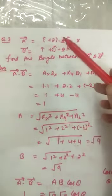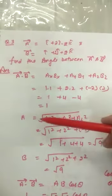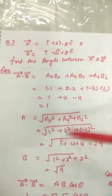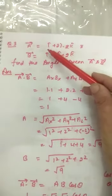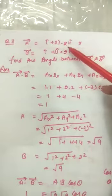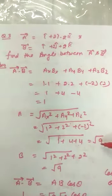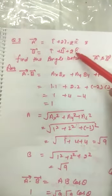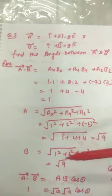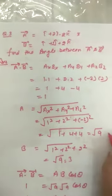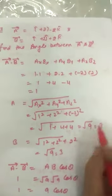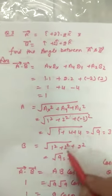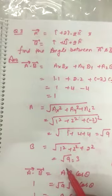Then we find the magnitude of vector a. The formula for magnitude is: square root of (ax² + ay² + az²). With ax=1, ay=2, az=minus 2, the magnitude is under root 9, which equals 3. Similarly, the magnitude of vector b is also under root 9. We write it in terms of under root in general, in case we can't simplify the square root.